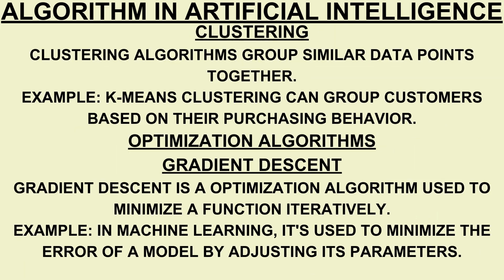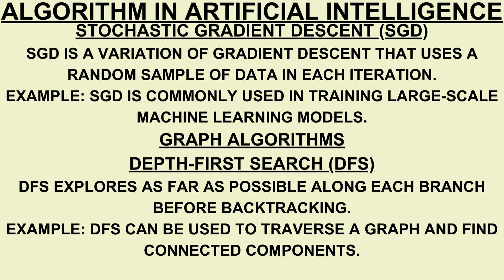Clustering: clustering algorithms group similar data points together. For example, K-means clustering can group customers based on their purchasing behavior. Optimization algorithms: gradient descent is an optimization algorithm used to minimize a function iteratively. In machine learning, it is used to minimize the error of a model by adjusting its parameters. Stochastic gradient descent (SGD) is a variation of gradient descent that uses a random sample of data in each iteration, commonly used in training large-scale machine learning models.